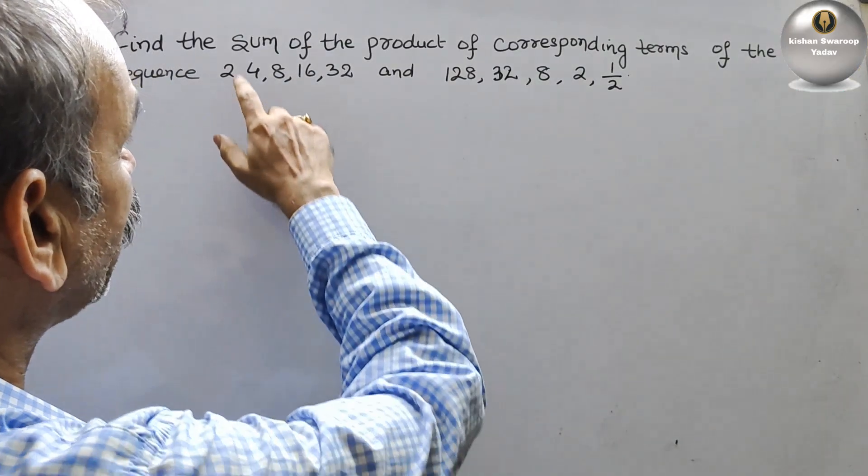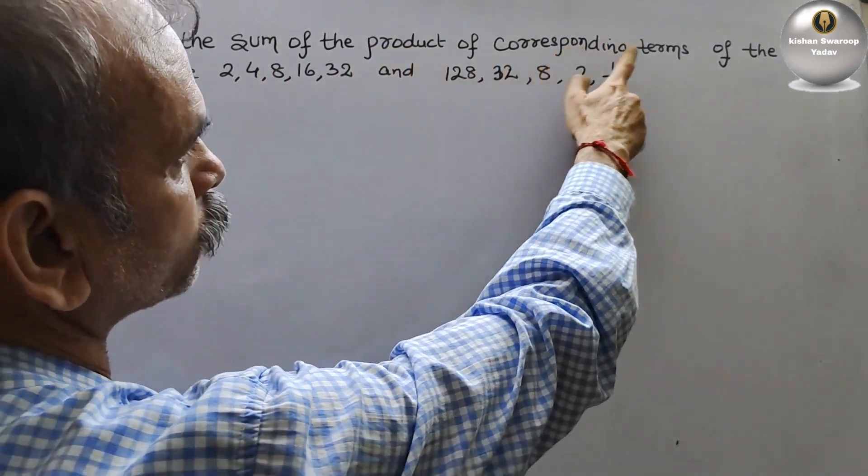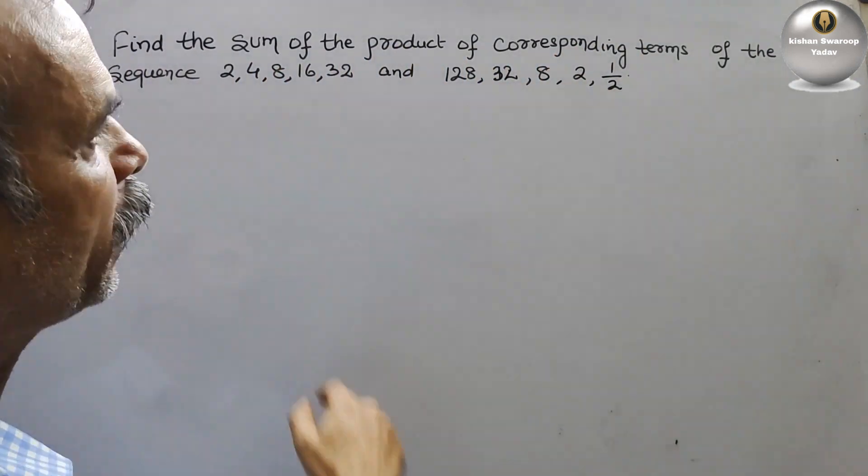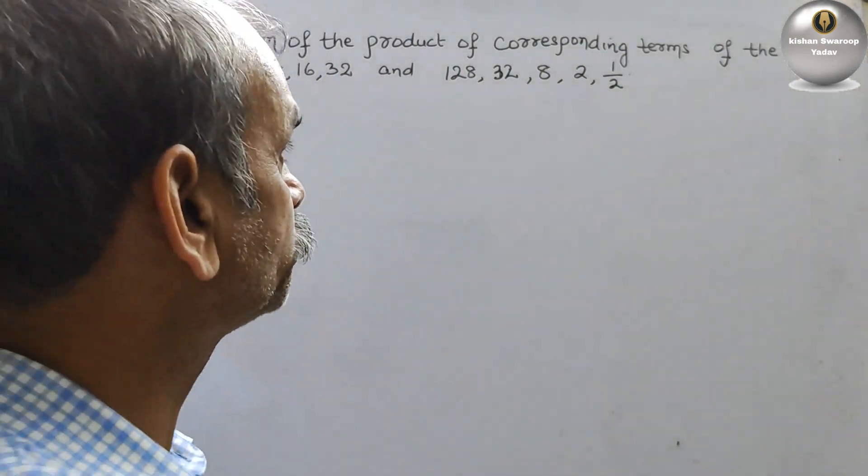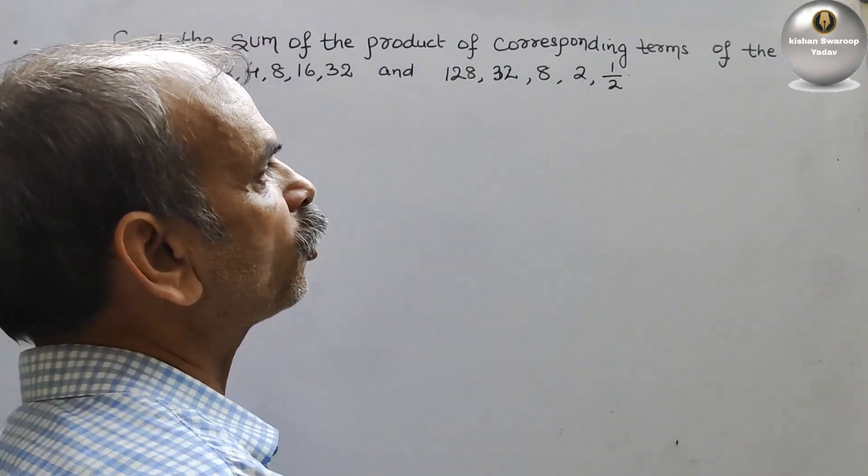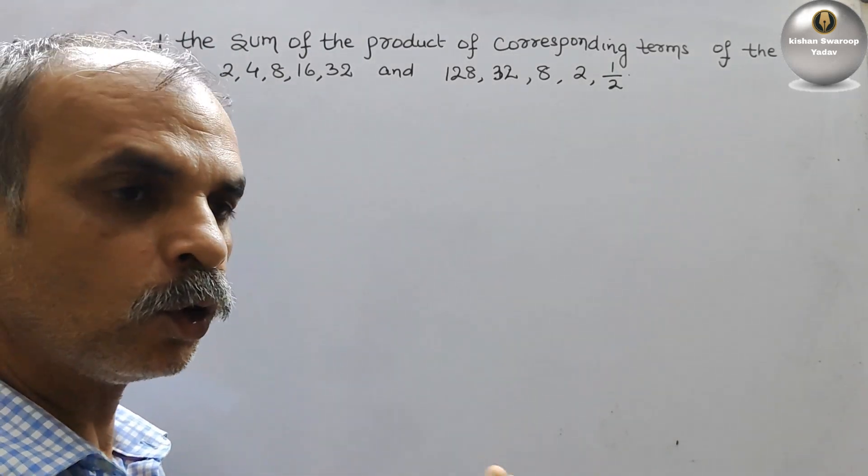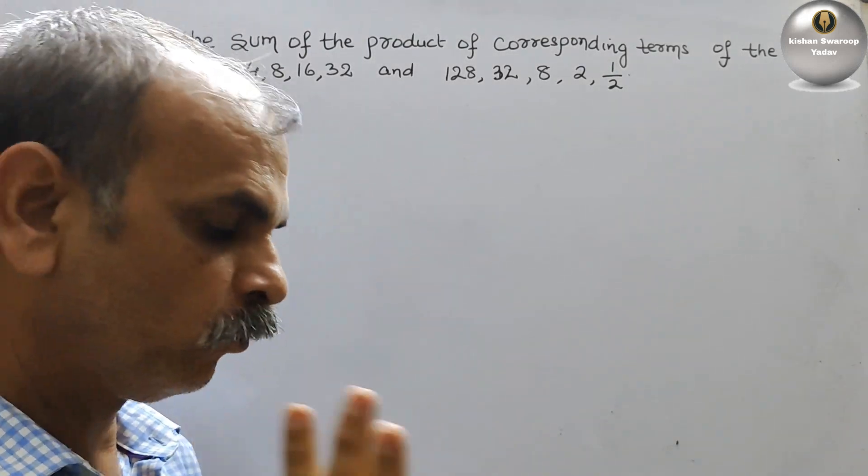The question is: find the sum of the product of corresponding terms of the sequences 2, 4, 8, 16, 32 and 128, 32, 8, 2, 1/2.